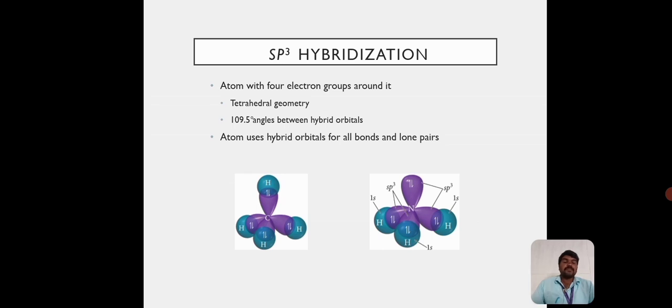Atoms with four electron groups around it have tetrahedral geometry with 109.5 degree angles between the hybrid orbitals. Atoms use hybrid orbitals for all bonds and lone pairs.